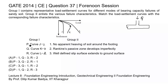Checking the options: P is 1, which is given in options A and D. Q is 3, which is given in option A only. R is 2, which is also given in option A. So the correct match is given in option A, and option A is the correct answer for this question.